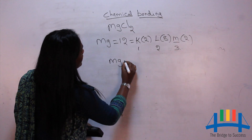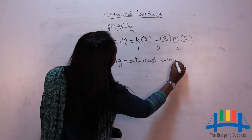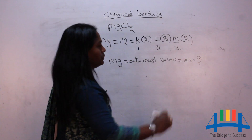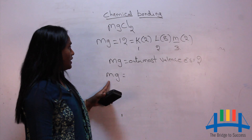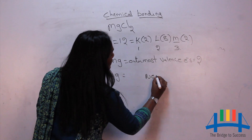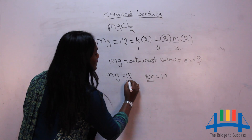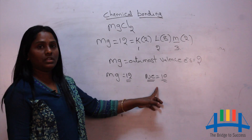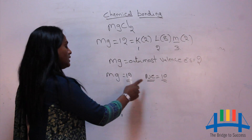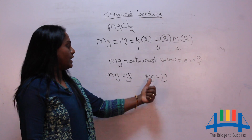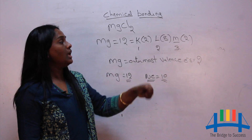Magnesium's outermost electrons are equal to 2. Now find its nearest noble gas. Magnesium has atomic number 12 and neon has atomic number 10 — neon is a noble gas. So magnesium is nearest to neon.